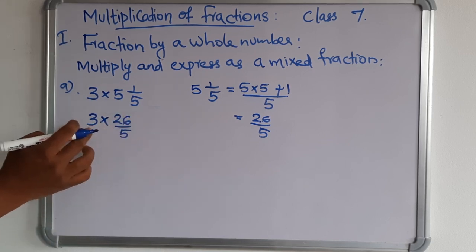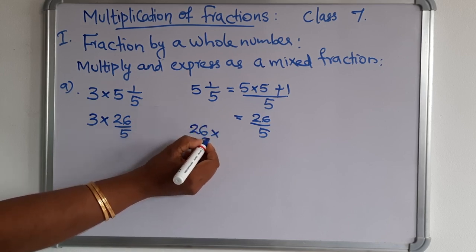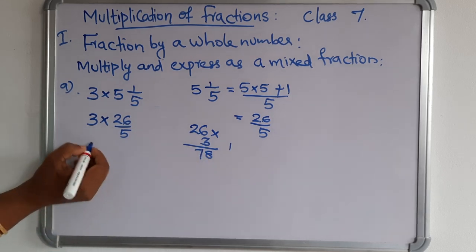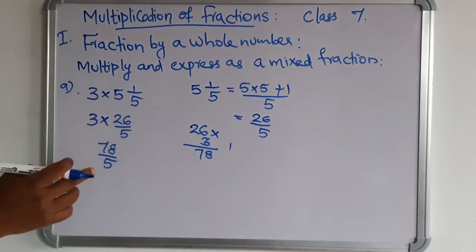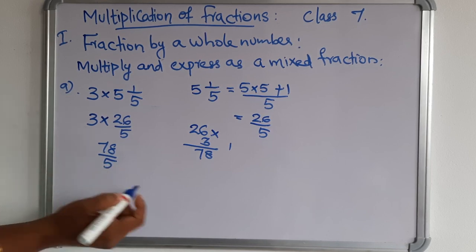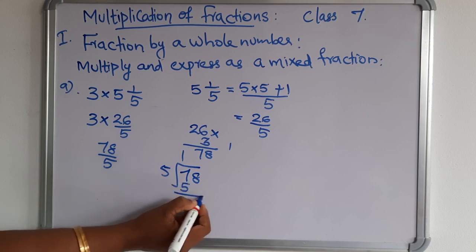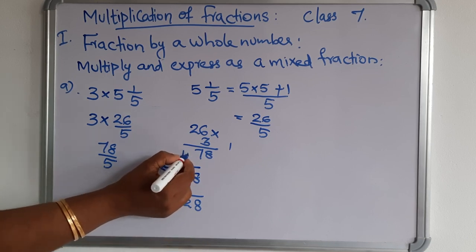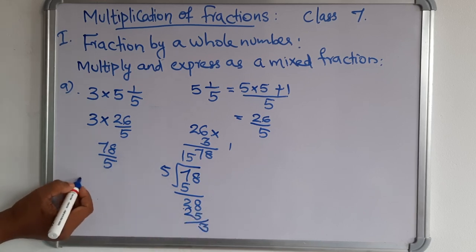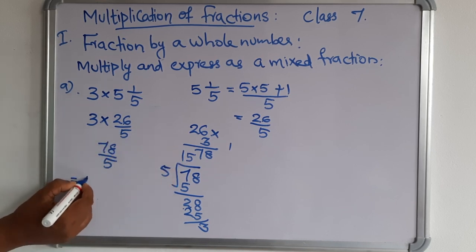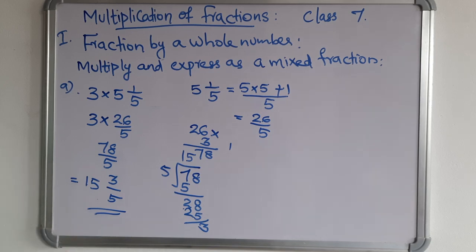This is a whole number and this is a fraction, so just multiply the numerator with the whole number: 3 × 26 = 78. So the result is 78/5. But the question says express as a mixed fraction, so we convert by division: 78 ÷ 5. 15 fives are 75, and the remainder is 3. So the answer written as a mixed fraction is 15⅗.